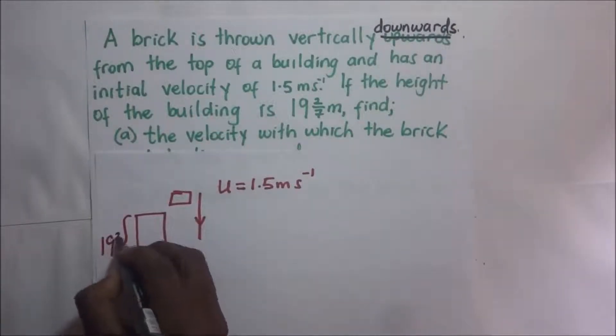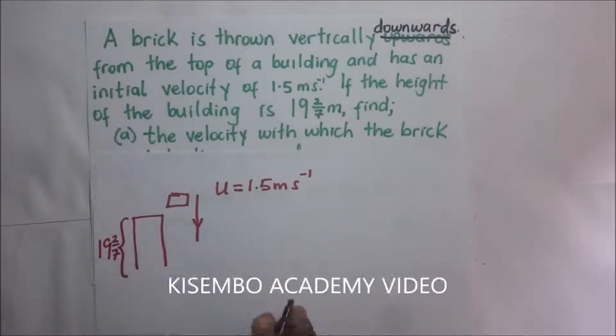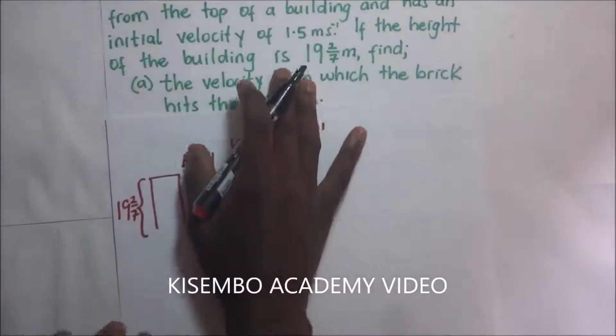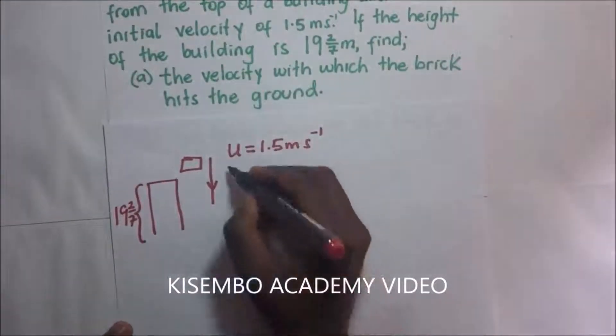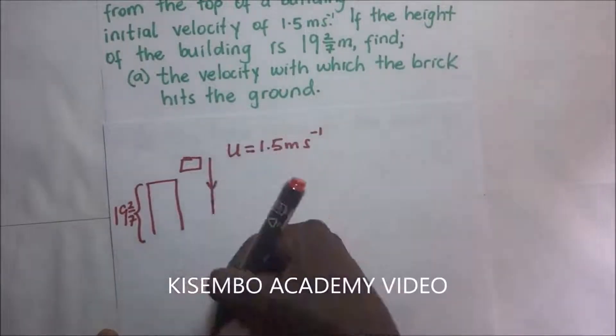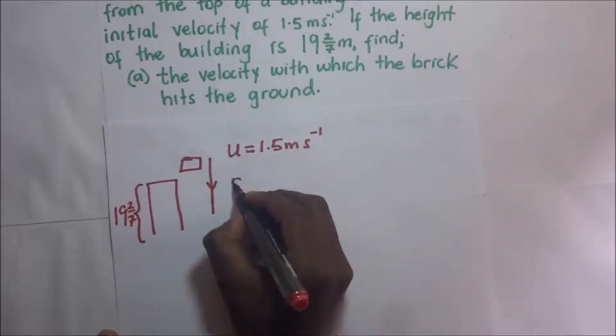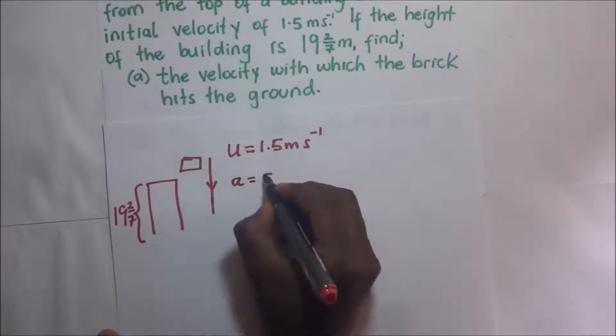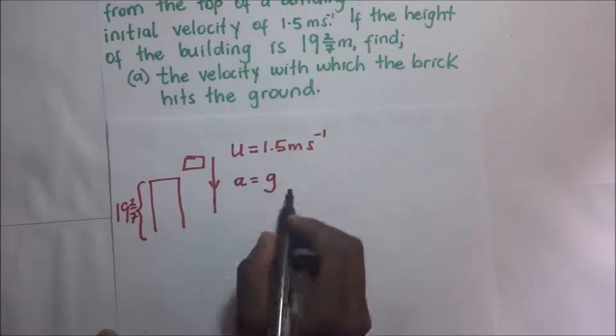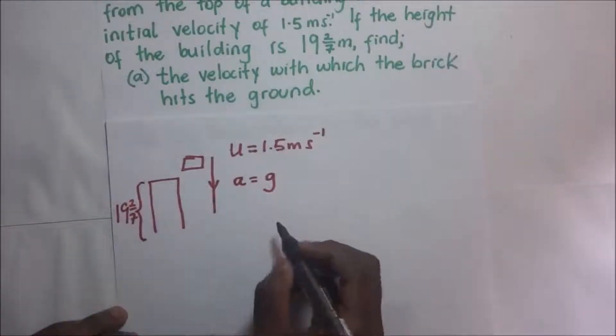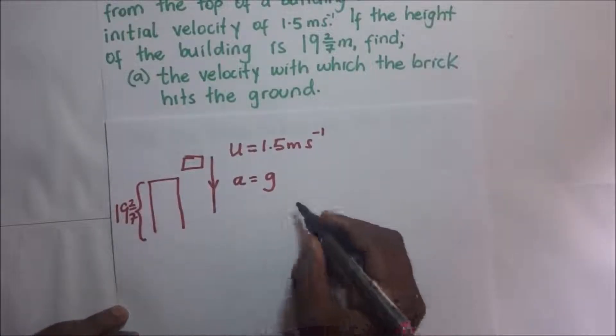is 19 2/7 meters. Find the velocity with which the brick hits the ground. Now of course as it's moving downwards, it's moving towards the earth. So it means that the acceleration is g, it's positive gravity.